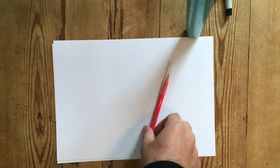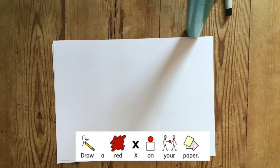First thing you need to do is draw a red X marks the spot on your piece of paper.